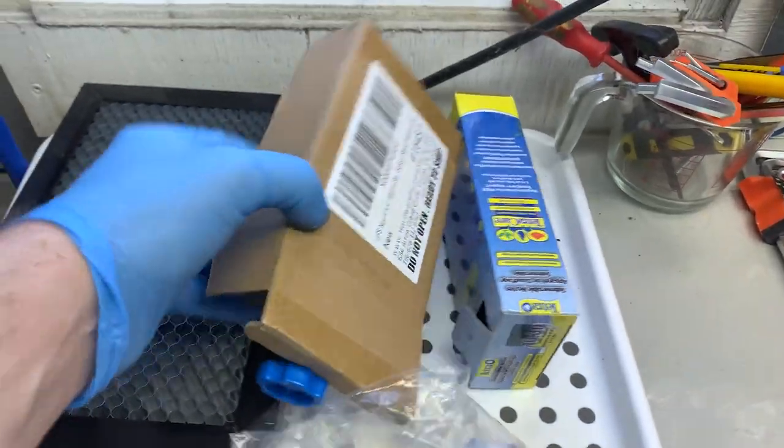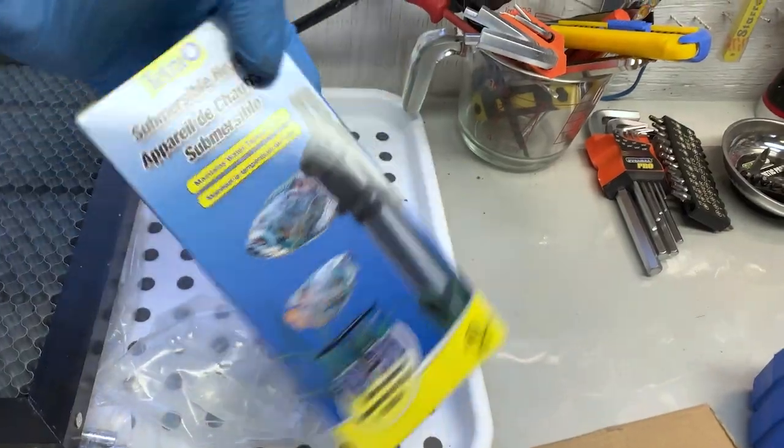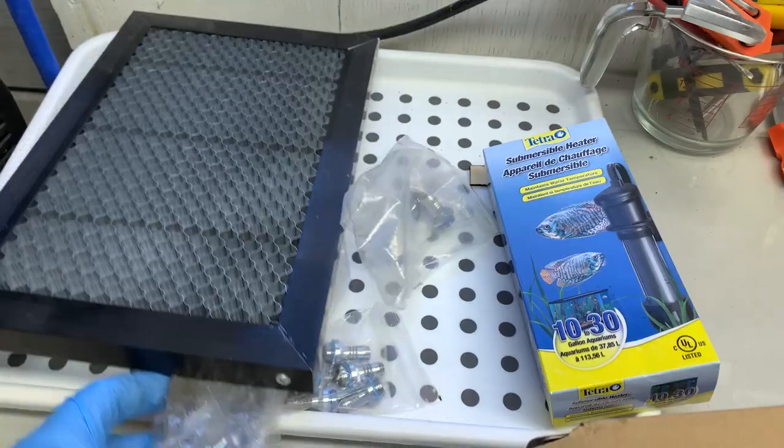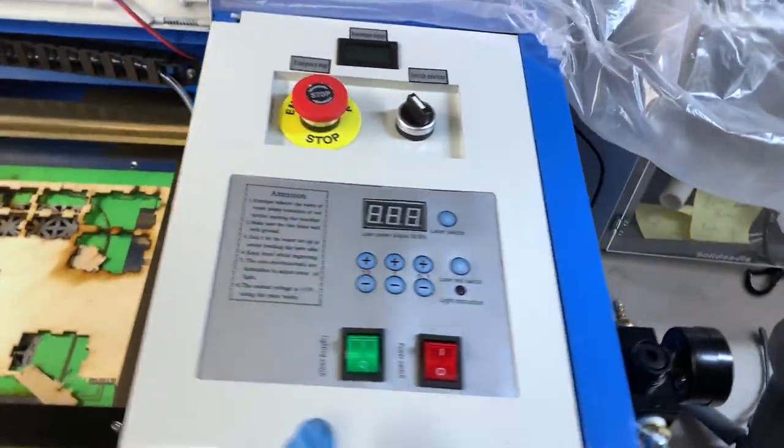All these components came from Amazon or even my local pet store for the aquarium heater, but I'll put all the links down below. They're also going to be added to my GitHub repository where I keep all my information on this laser cutter and the mods I've done to it.